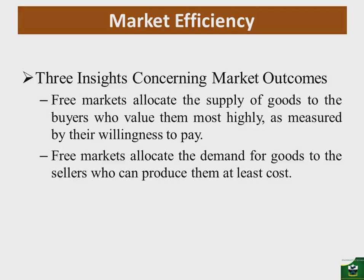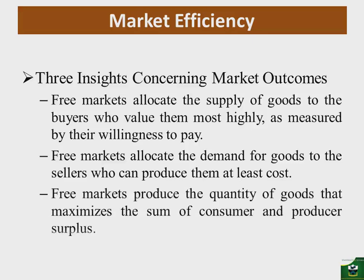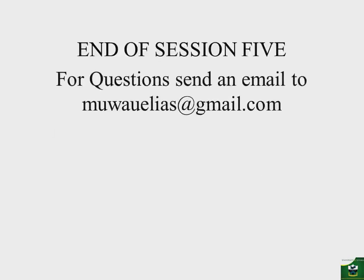Second, the free market allocates the demand for goods to the firms or sellers who can produce them at the least cost — those able to produce at least cost are likely to get the larger share of the market. Finally, the free market produces the quantity of goods that maximizes the sum of consumer and producer surplus.